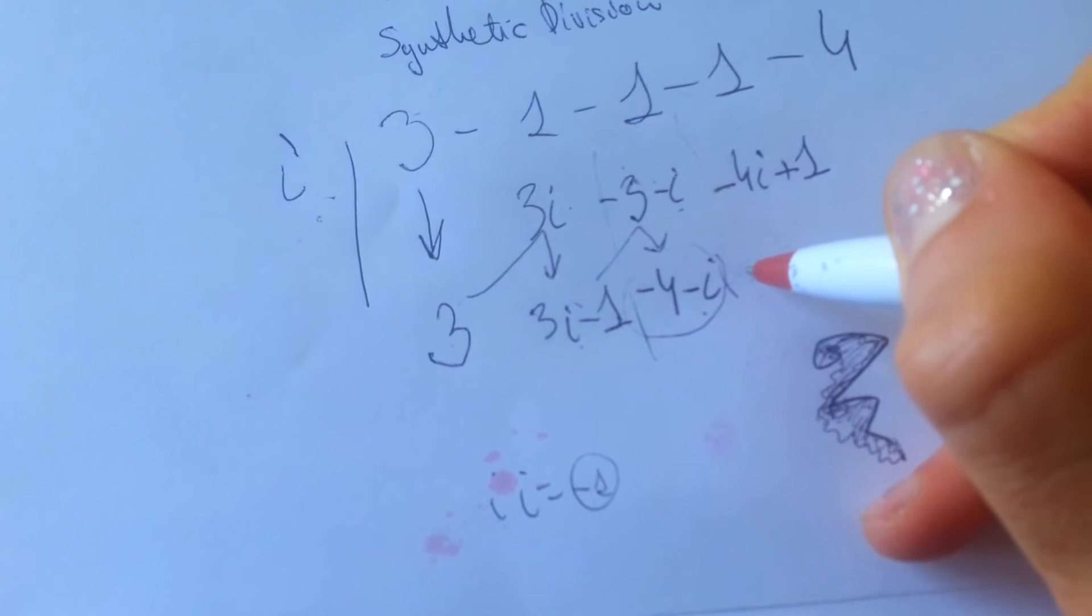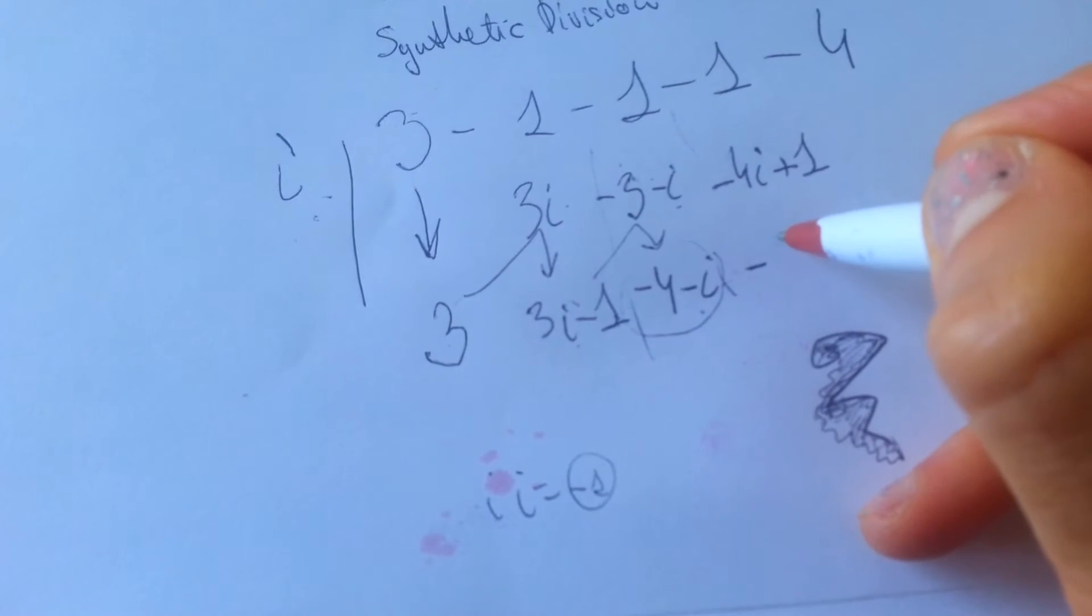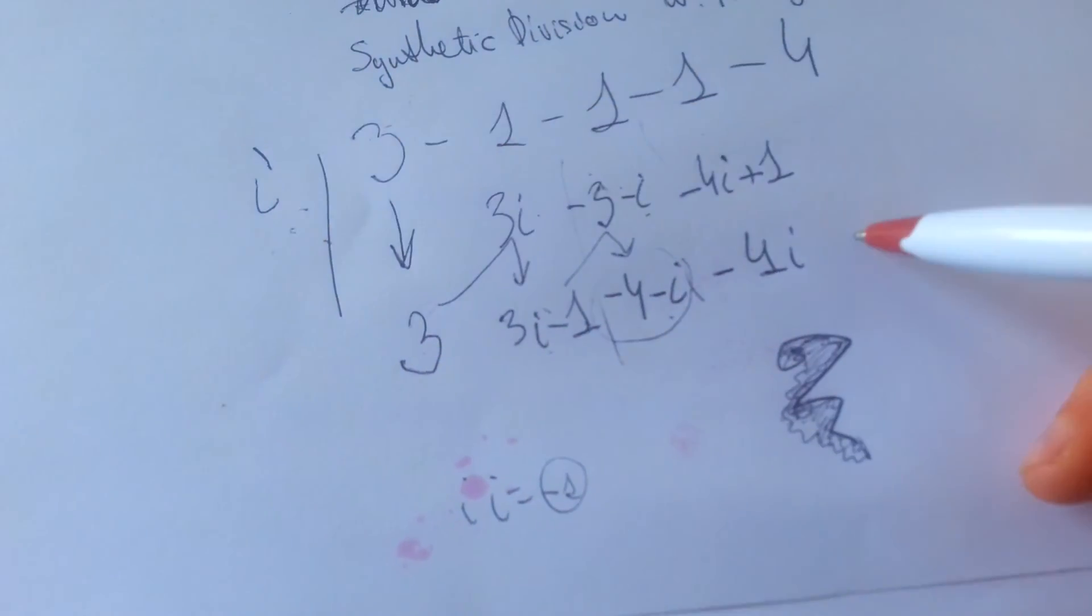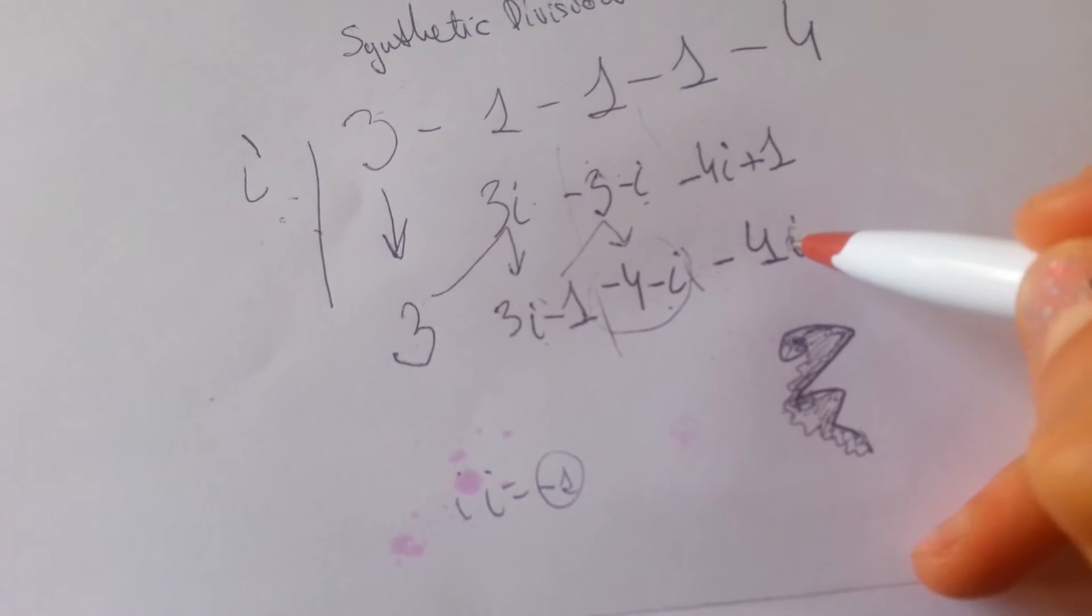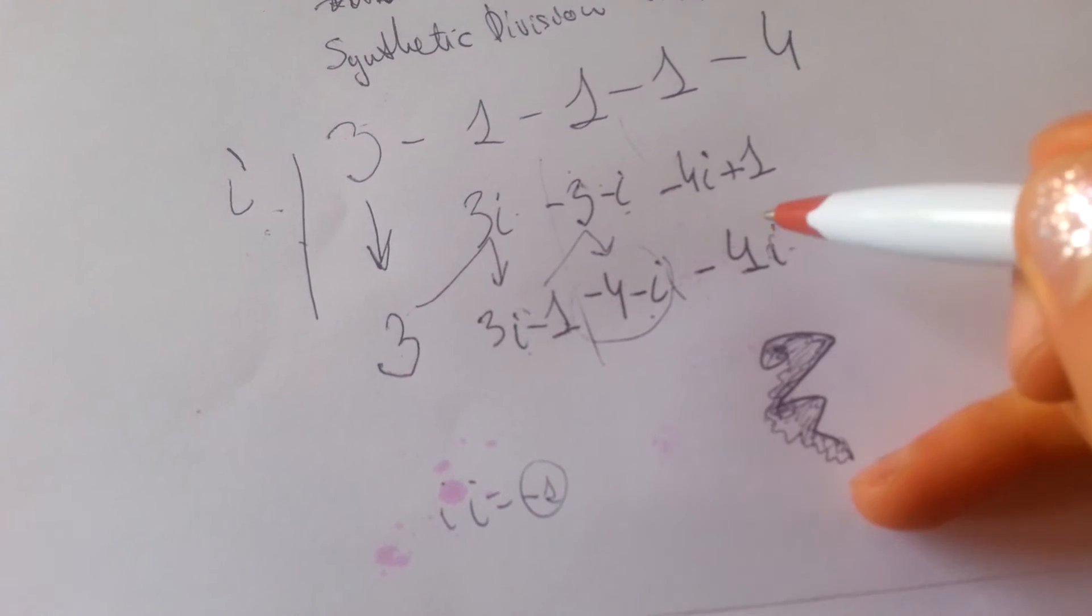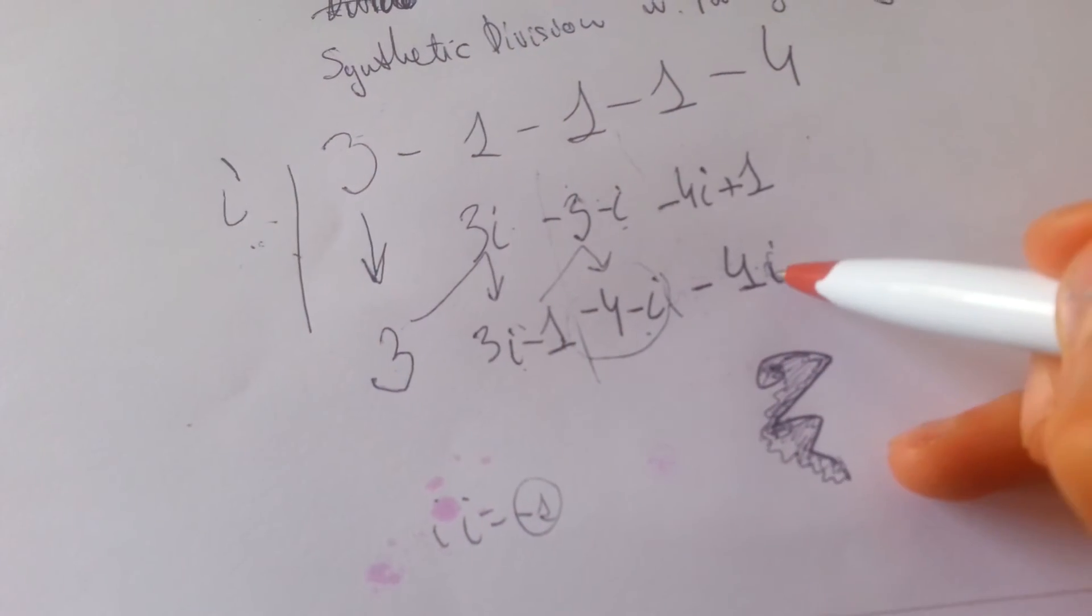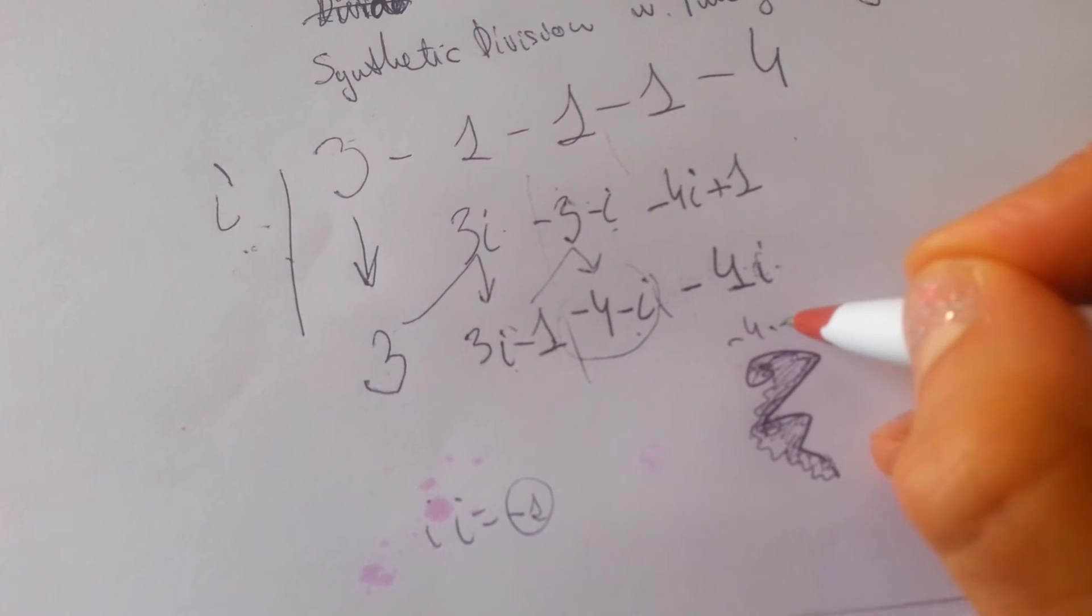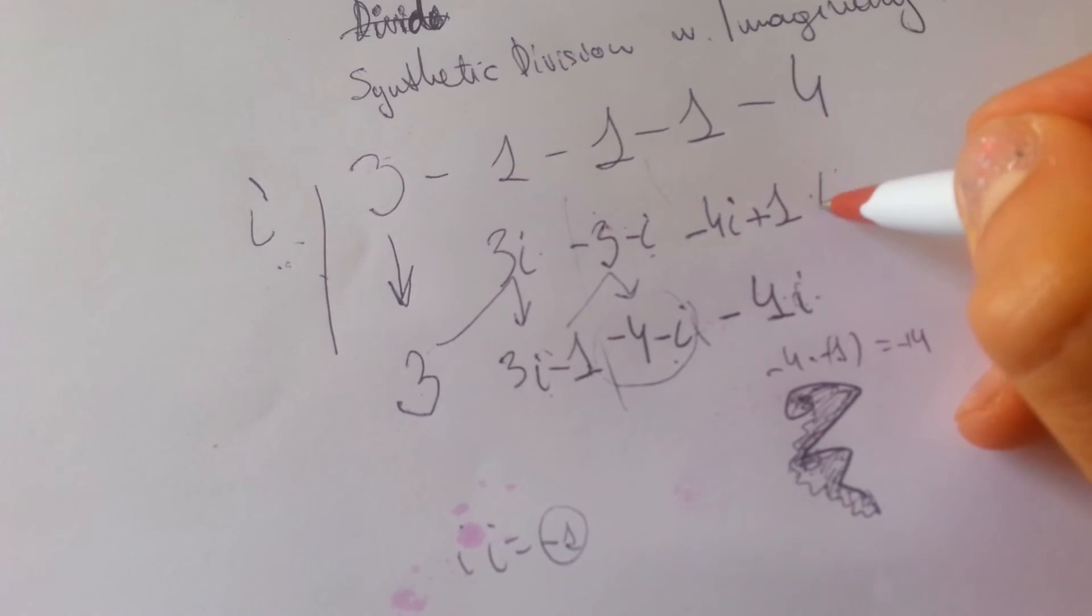Here we subtract minus 1, we get minus 4i, and multiply i. i and minus i, minus minus i, we get plus i. So now i and i, you get minus 1, so minus 4 times minus 1, you get plus 4.